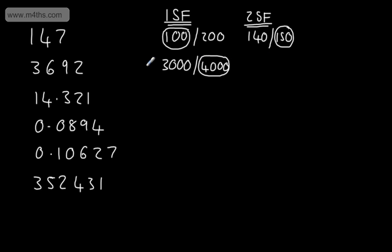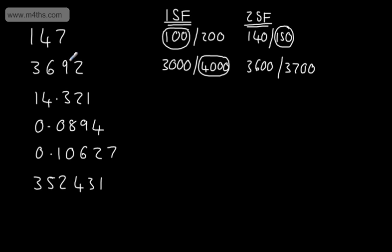Two significant figures now gives me the hundreds column. So my choices are 3,600 or 3,700. I look to the right and we can see that this number is greater than 5 — therefore, correct to two significant figures, it will be 3,700.